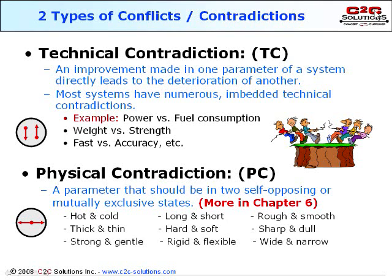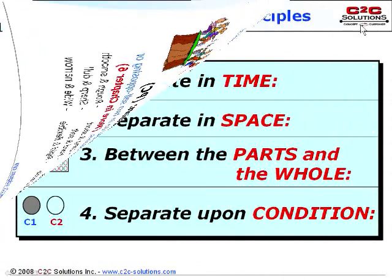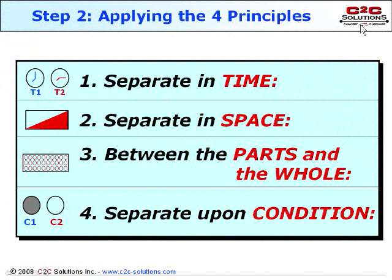Examples include a manufacturing process that you want to run hot for one reason but cold for another. Or a bracket that needs to be thick for strength but thin for weight. Or a service you want to finish fast to get it done, but slow to be done correctly. Or a blade that's sharp to cut but dull for safety. These are physical contradictions because they seem physically impossible to solve. We'll discuss several different ways to discover the physical contradiction at the root of your situation or challenge. Once you discover or derive the physical contradiction, there are four main separation principles that can be applied to generate novel solutions.